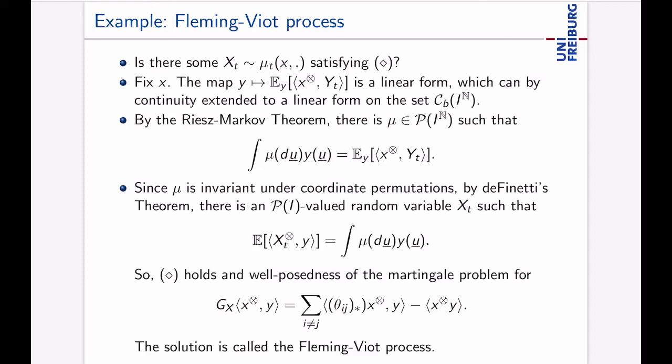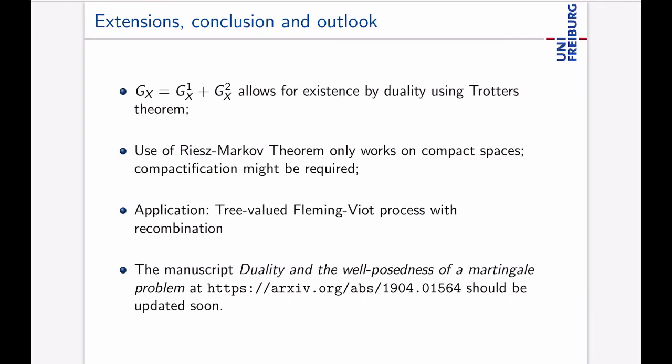Let me conclude and also extend a bit what we do in our manuscript which in fact can be downloaded here which should be updated also soon. One thing is sometimes GX is a composition of two things for example here a mutation operator and the operator which we have for the Fleming-Viot process and then we can still do something using Trotter's theorem. One downside is the Riesz-Markov theorem which we need here in the example only works on compact spaces and therefore compactification of the state space might be required in the case you want to apply this so you have to take care when using the Riesz-Markov theorem.